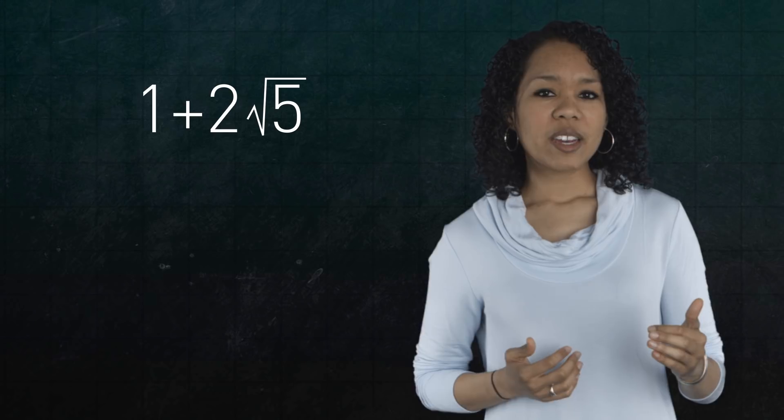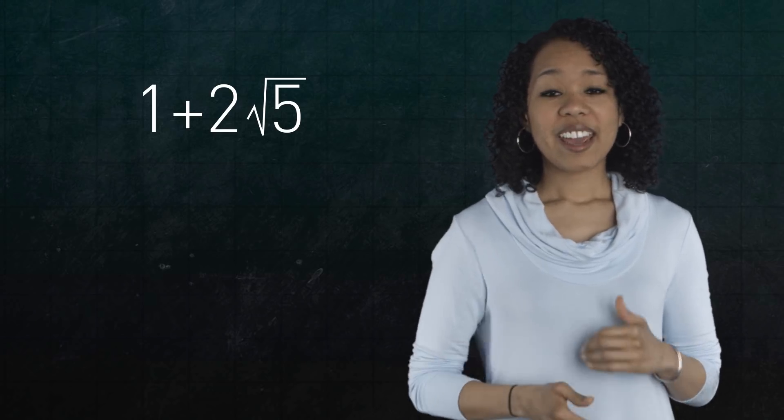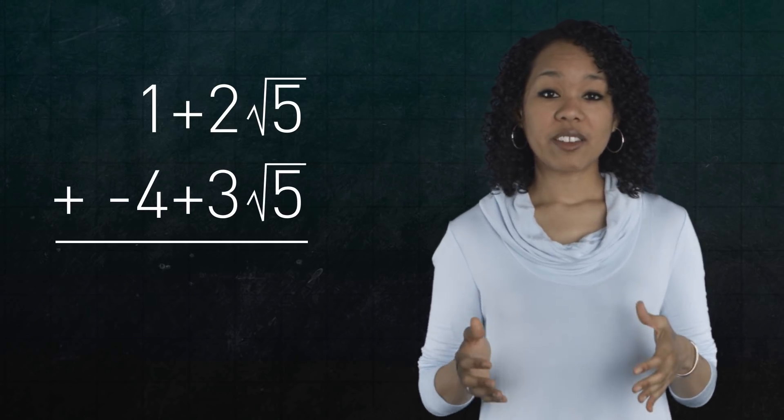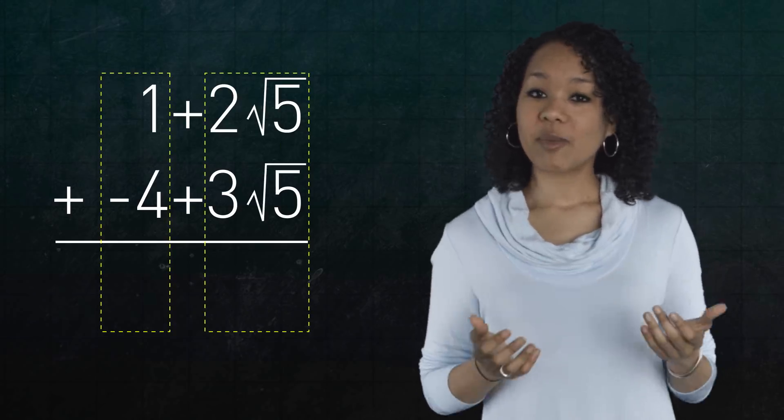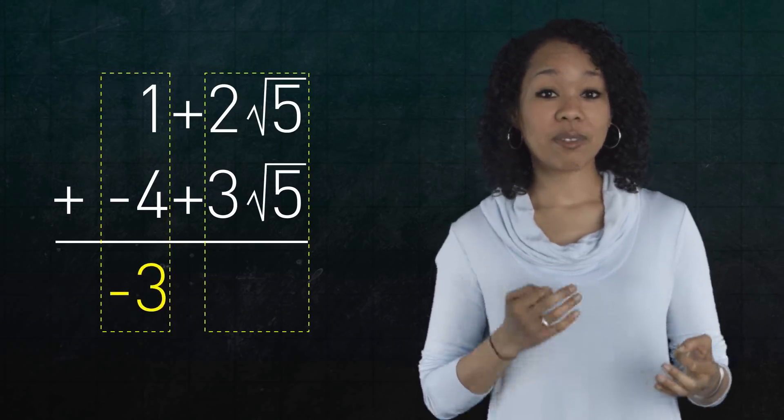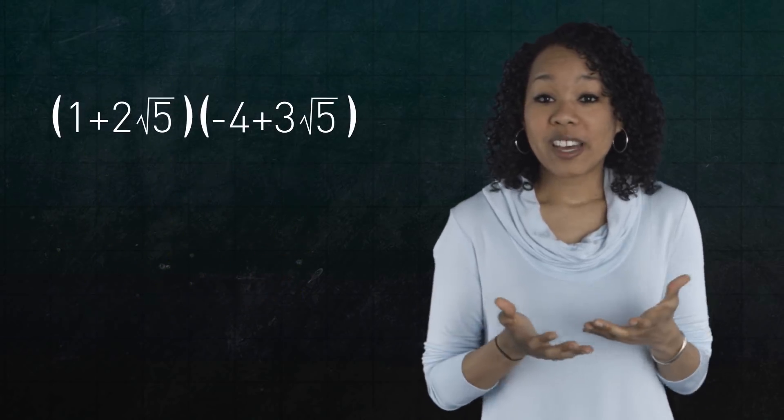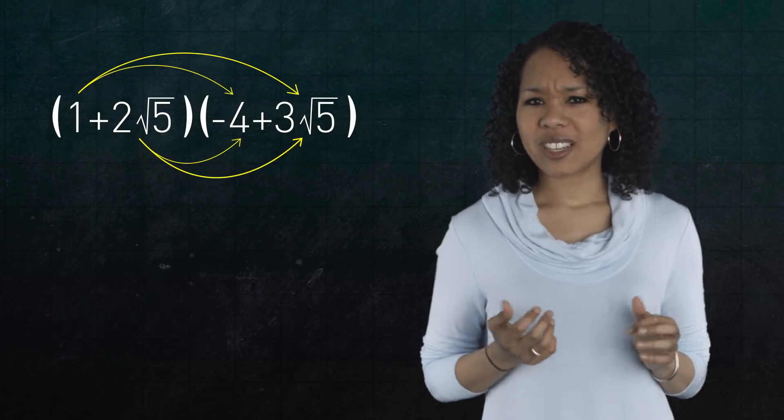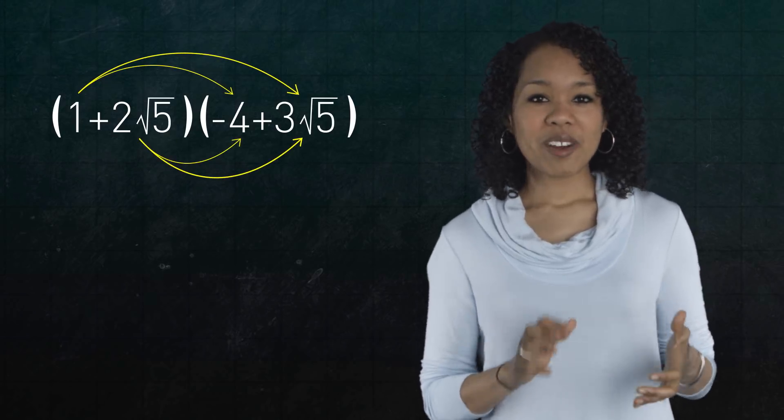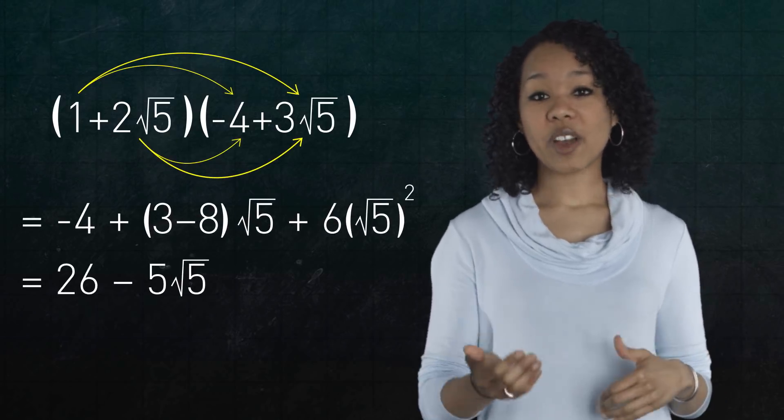Now, the nice thing is that we can add and multiply these numbers together. For example, to add 1 plus 2 root 5 and negative 4 plus 3 root 5, just add the integer parts and the square root parts together. So, their sum is negative 3 plus 5 root 5. And we can also multiply them together. We'll just use the familiar distributive law, which some folks like to call FOIL. So, their product is 26 minus 5 root 5.